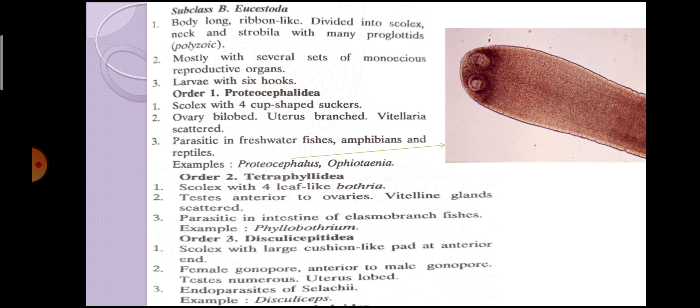Next is Subclass Eucestoda. The body is long and ribbon-like, divided into scolex, neck, and strobila. The strobila contains many proglottids. Mostly with several sets of monoecious reproductive organs. The larvae have six hooks.